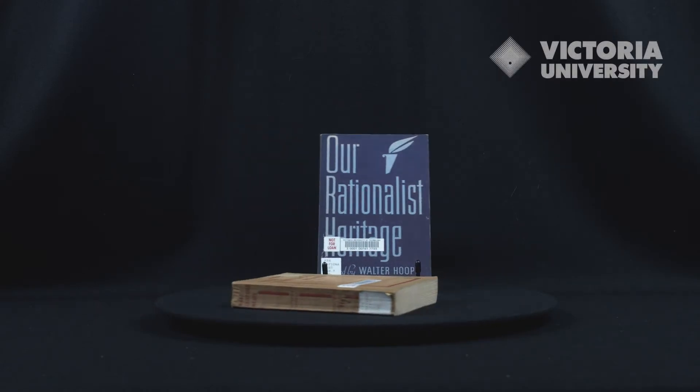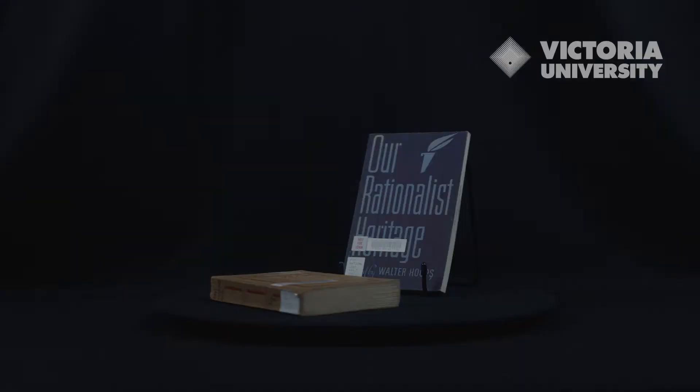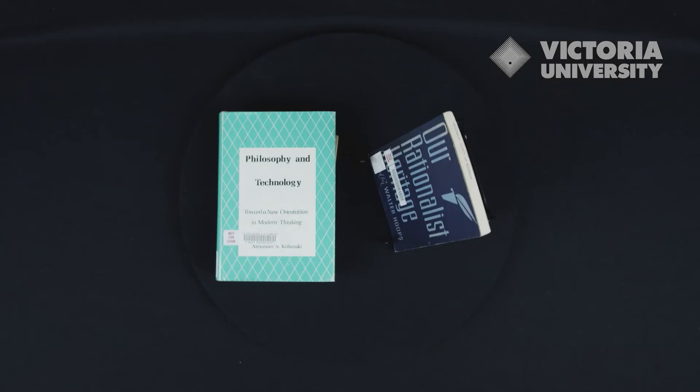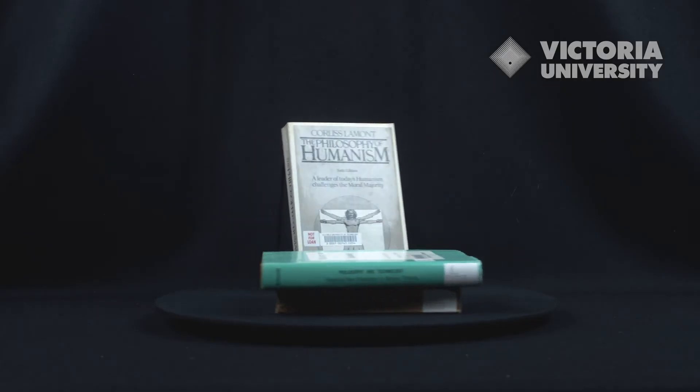The Rationalist Society of Australia summarizes its interests in the following statement: The Rationalist Society of Australia prefers reason to prejudice, evidence to faith, promotes secular ethics and education, and holds lectures, conferences, and social activities.